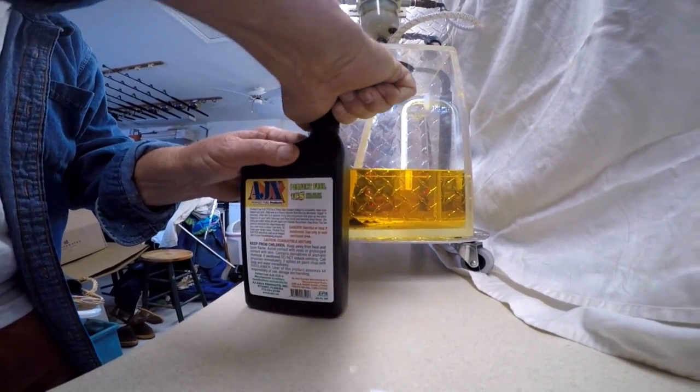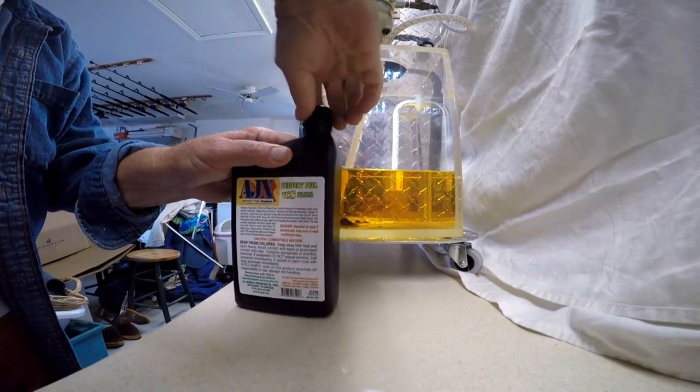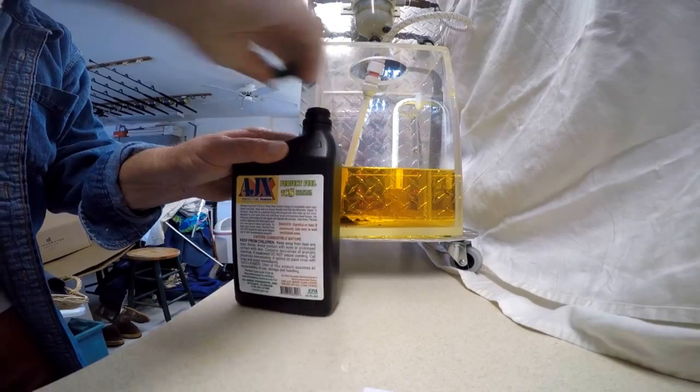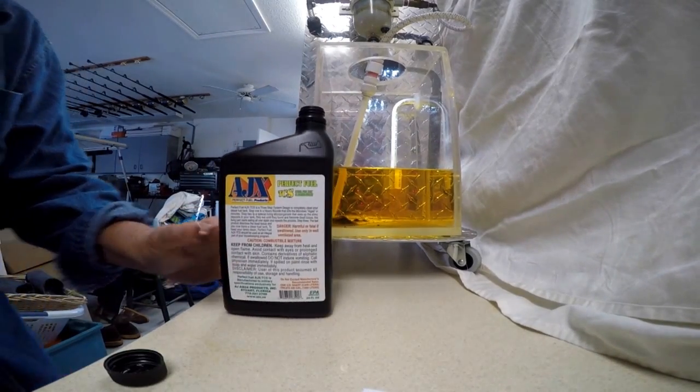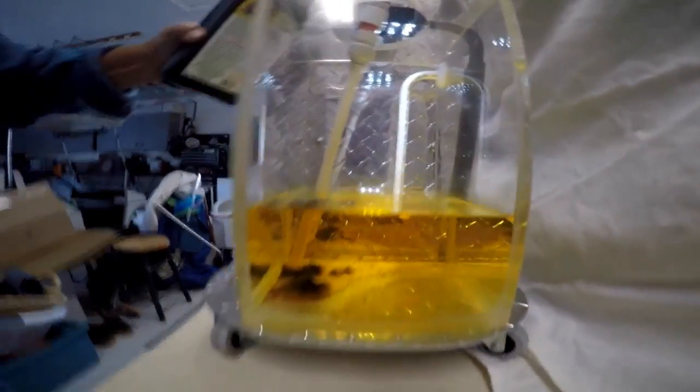The complete instructions are on the back of the bottle. One quart of AJX will clean a 500 gallon tank. We're going to take the AJX and put a little spray in there.